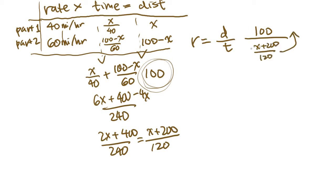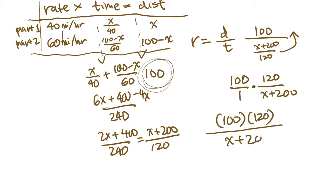Now remember that the average rate equals total distance over total time. So total distance is 100. Total time is going to be X plus 200 over 120. When you do the division, you're going to be flipping, you're going to be reversing these and then multiplying. So what you get is 100 times 120 over X plus 200. And that is going to be answer choice E. In the book, they write it out as 12,000 over X plus 200. But it's the same thing.